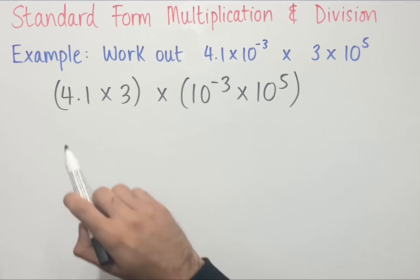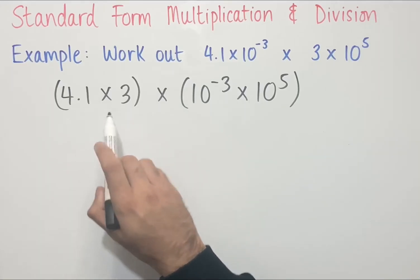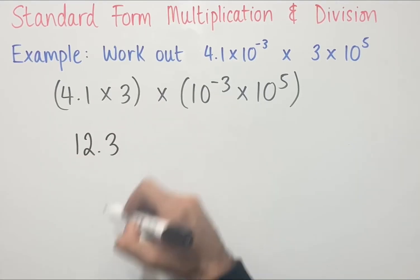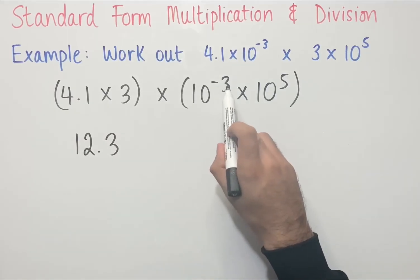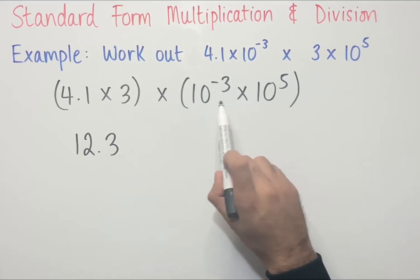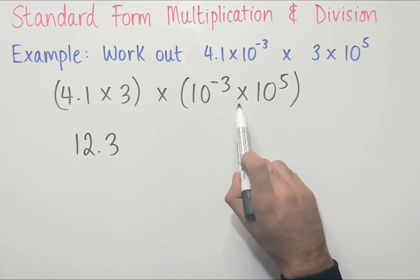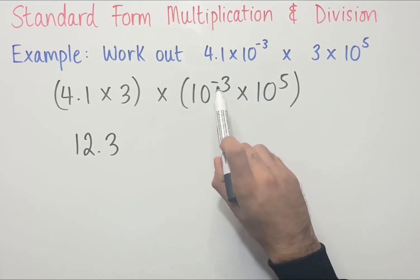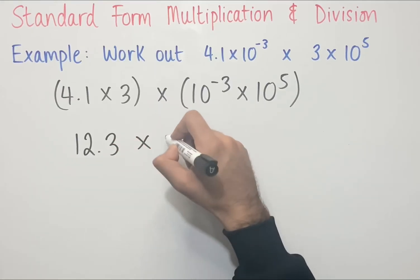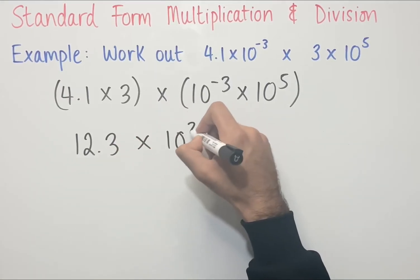We then multiply these together. So 4.1 times 3 gives us 12.3, and 10 to the power of minus 3 times 10 to the power of 5 gives us 10 to the power of 2. Since we've got indices with the same base and we're multiplying, we add the powers together. So we get 12.3 times 10 to the power of 2.